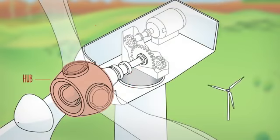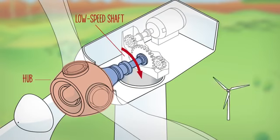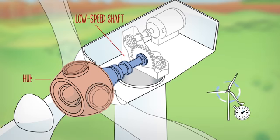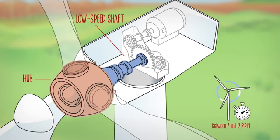The blades are attached to the wind turbine through the hub, which is coupled to the low speed shaft. The low speed shaft is given this name because it spins at the same speed as the blades, between 7 and 12 revolutions per minute.